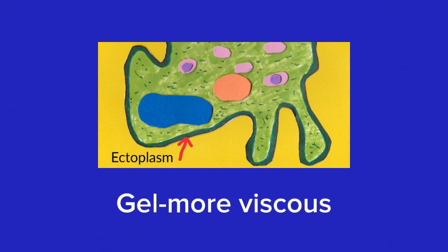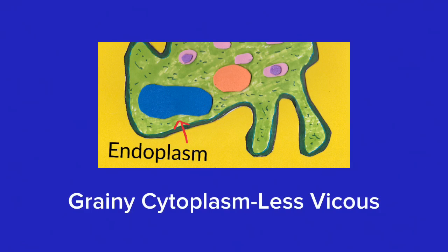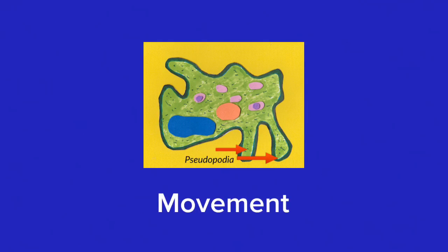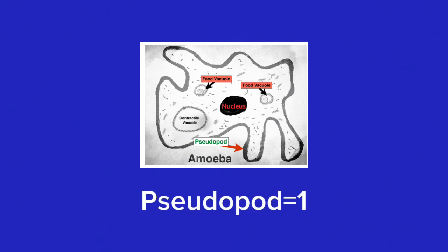The ectoplasm is found just inside the cell membrane and it is a gel-like substance. The bulk of the cytoplasm is made up of the endoplasm. The amoeba moves by forming these projections known as pseudopodia. Pseudopod means one and pseudopodia means many.